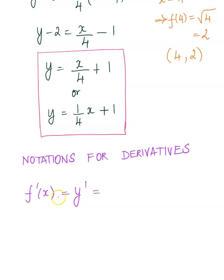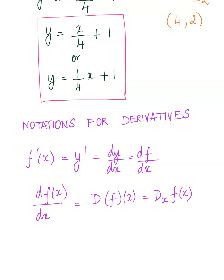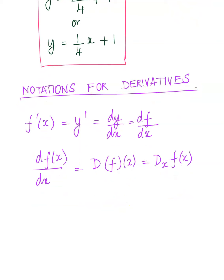So we have f prime of x — we've seen that. If you don't write it as function notation, you can simply say y prime. Then we have dy over dx, which is the same as change in y over change in x. This is convenient in physical sciences, because there you want to see the change of something over time — the change in position of an object over time. Then df over dx — there's a huge application in economics that comes from calculus. For this course, I will be using interchangeably one of these three notations.